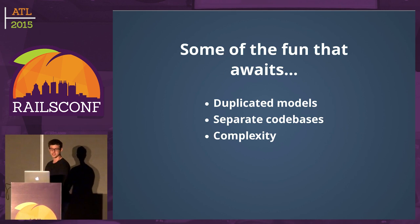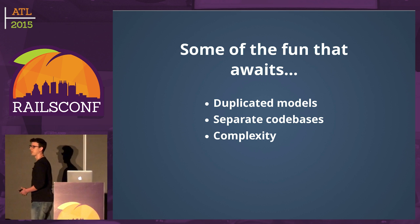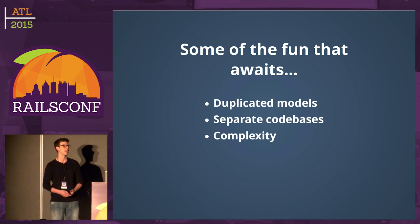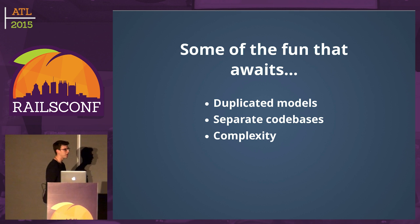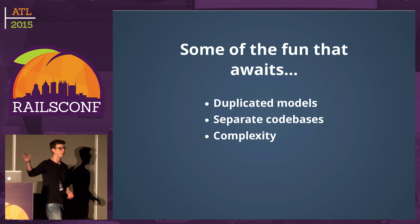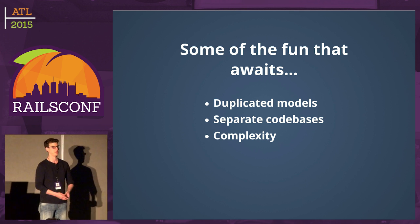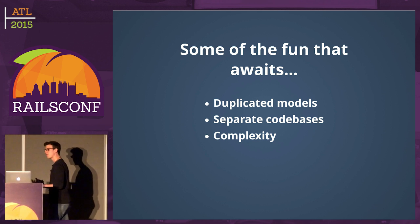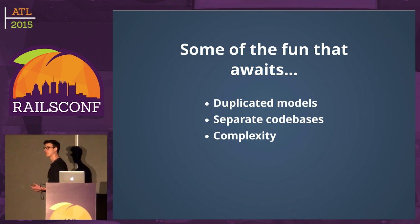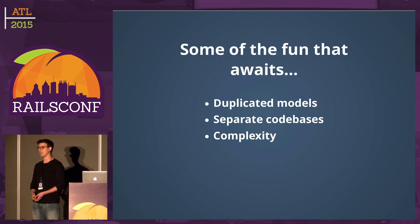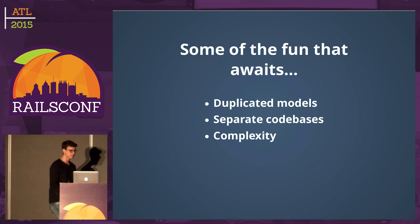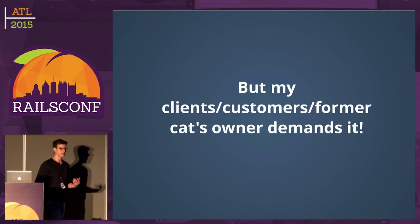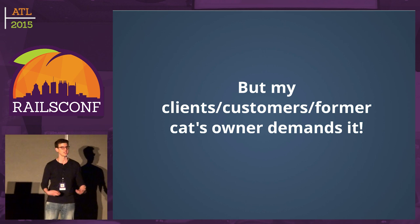Take a step back and think about the trade-offs. You will encounter duplicated models and separate code bases — if a user has to change something on the Rails side, you'll have to change it on the JavaScript side too. It gets messy, and there's overall complexity: when debugging, you often don't know whether you're looking at a client-side problem or a server-side problem.